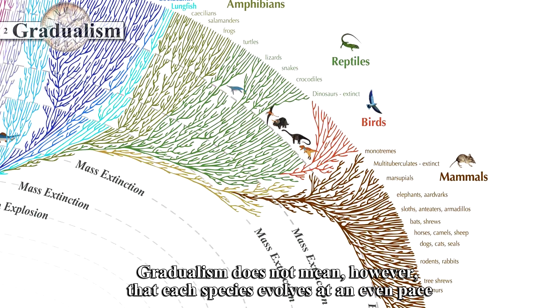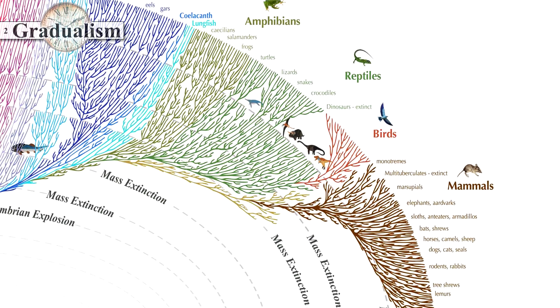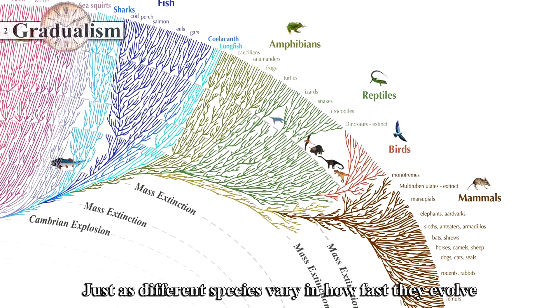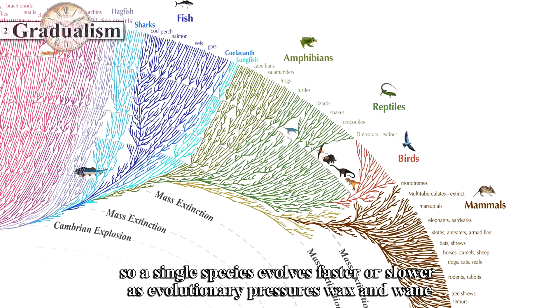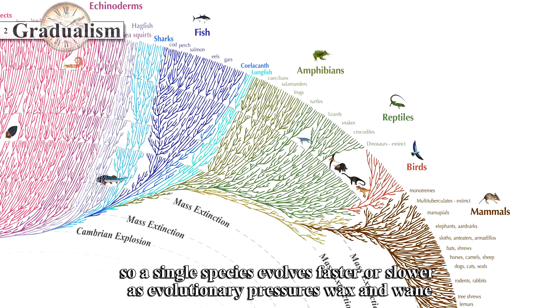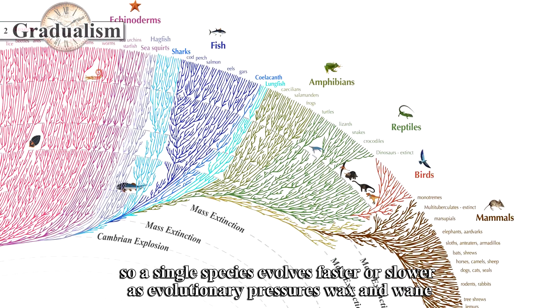Gradualism does not mean, however, that each species evolves at an even pace. Just as different species vary in how fast they evolve, so a single species evolves faster or slower as evolutionary pressures wax and wane.